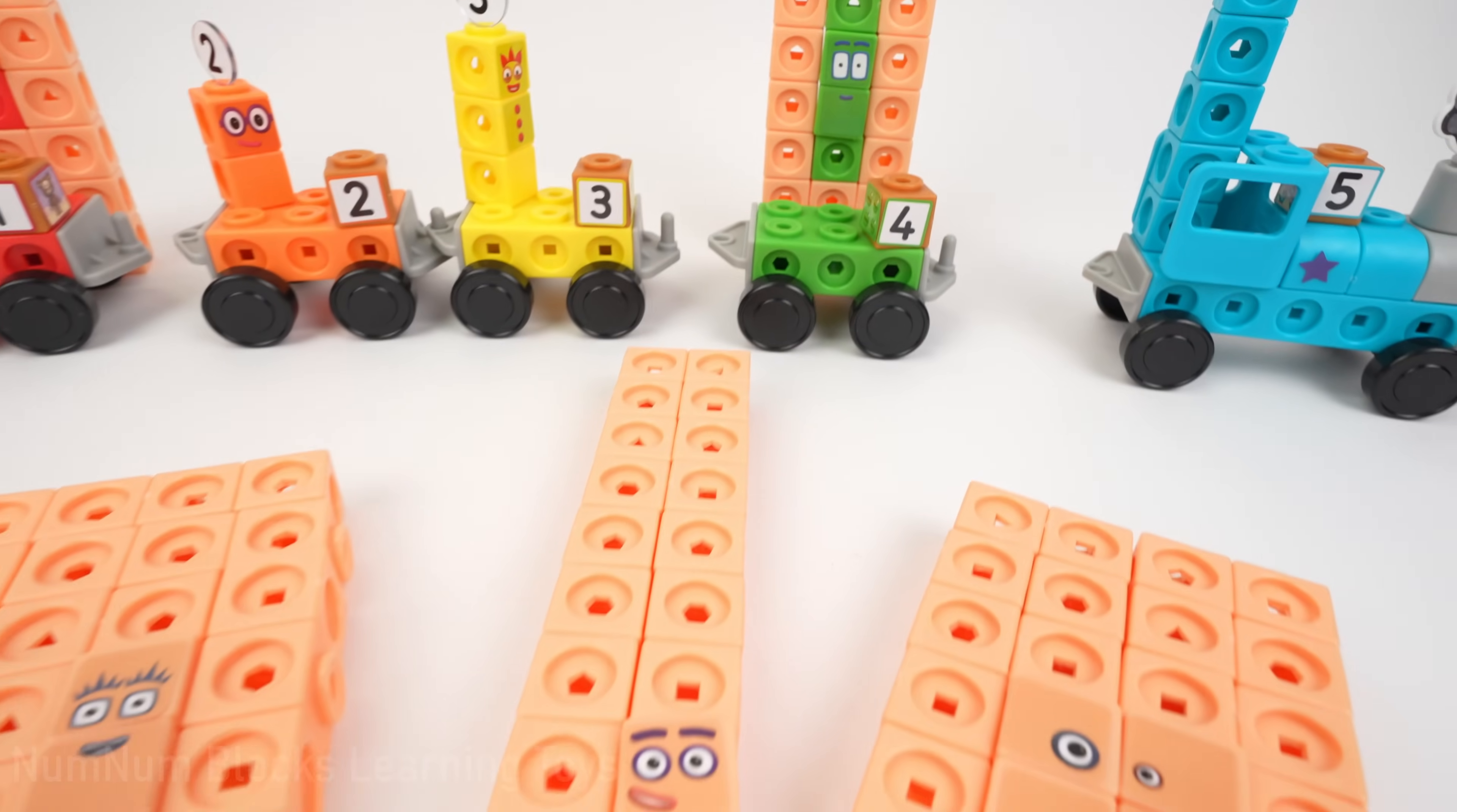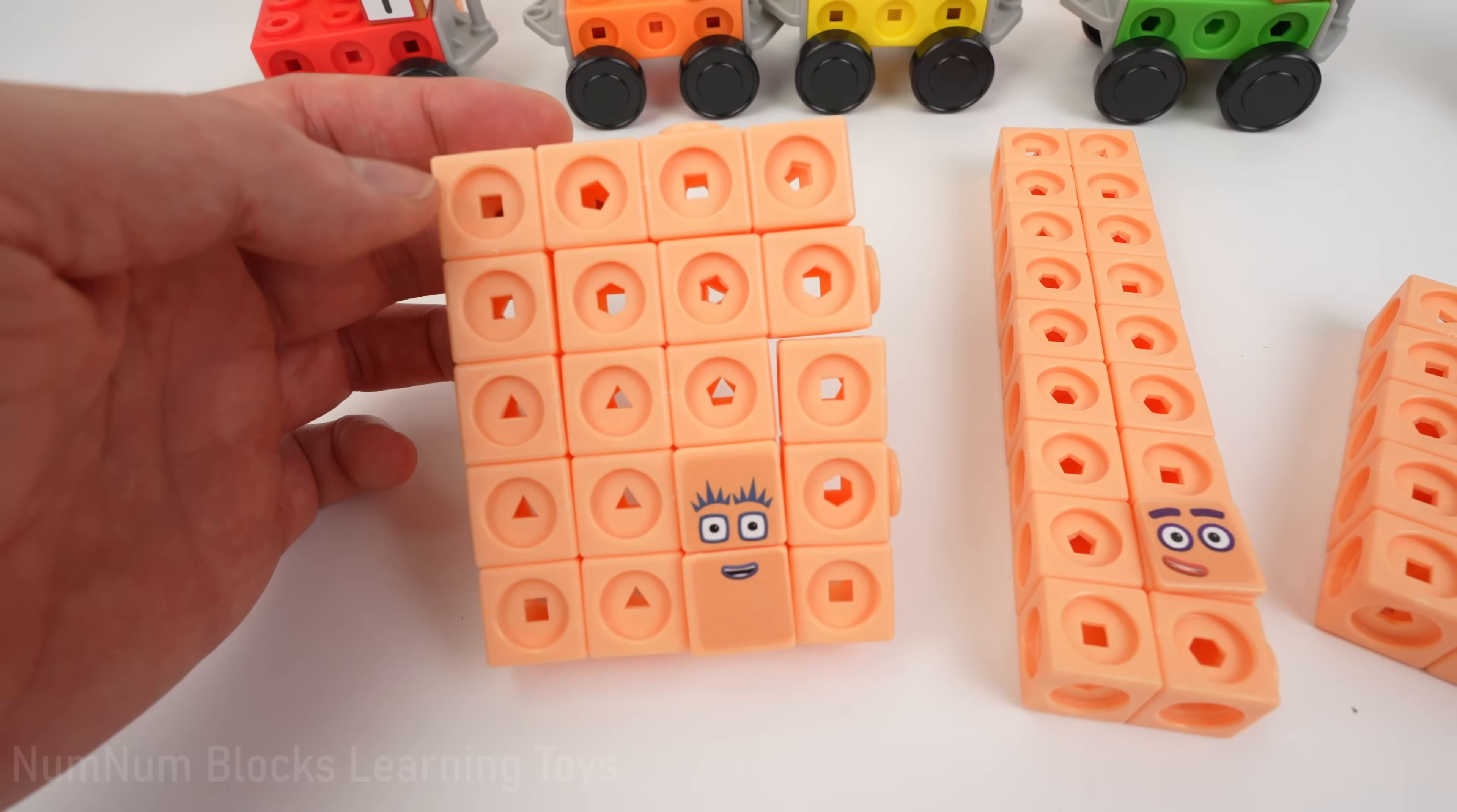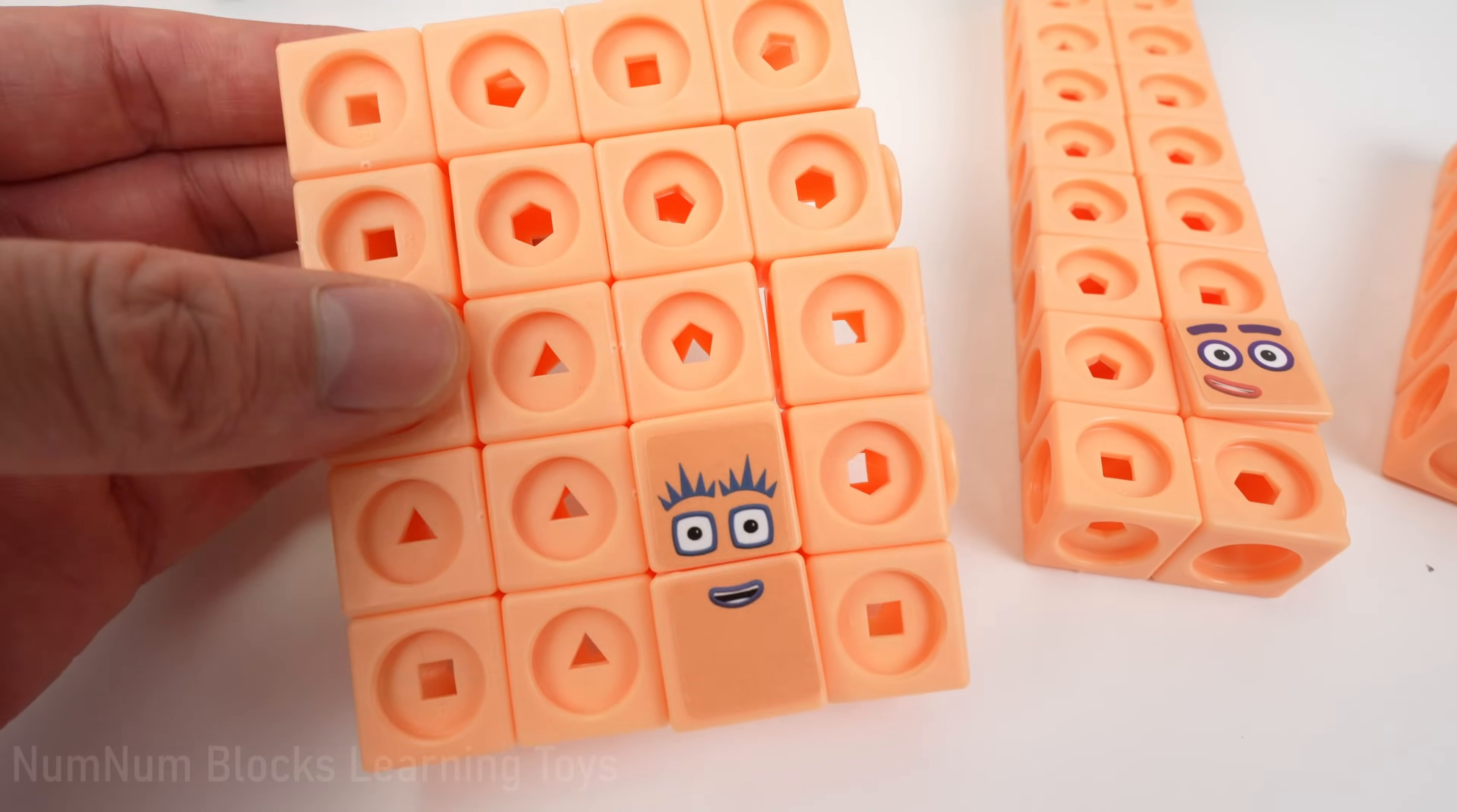We have three more number blocks to complete. Two of them look the same. They're both five by four rectangles. The one in the middle is a skinny rectangle. Let's help the number block on the far left. It's a four by five rectangle. Do you know this number block?